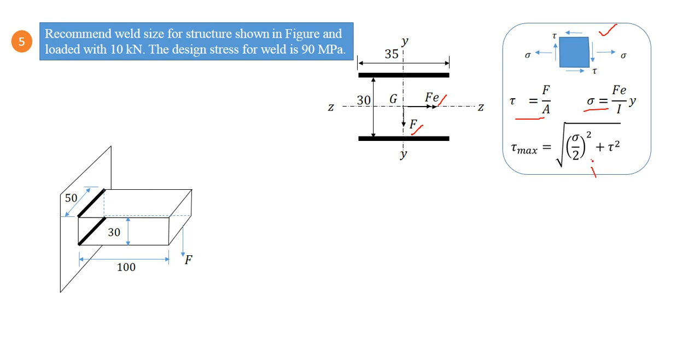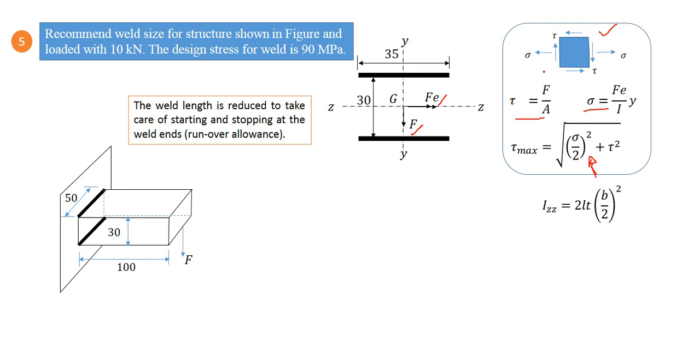Let us find out value of I. Here it is given by this. Again, it is mentioned that weld length is reduced to take care of starting and stopping at weld ends—that is run-over allowance. This is what we are considering in this particular case, so that is why we have used 35 mm, 15 mm we have used as this allowance.